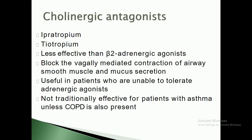As we know, cholinergic antagonists are classified into two categories. One is ipratropium and the second one is tiotropium. Cholinergic antagonists are those drugs which can block the vagally mediated contraction of airway smooth muscles and mucosecretions.